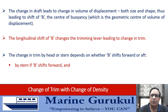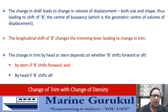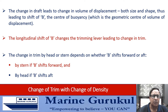If B shifts forward, the change in trim would be by stern. We are talking about change in trim, not the resultant trim. If the center of buoyancy shifts aft — because of the vessel moving from one density to another — the change in trim shall be by head.